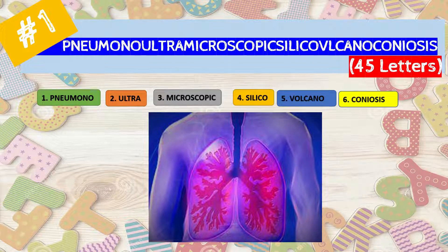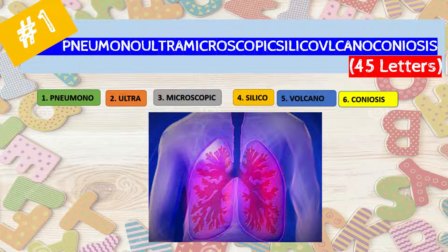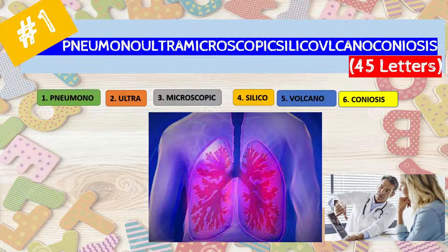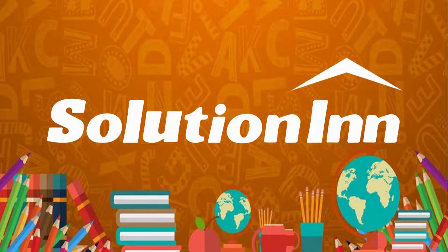Pneumonoultramicroscopicsilicovolcanoconiosis is a term for a lung disease caused by inhaling silica dust that causes inflammation in the lungs. As clear from the breakdown of this word, it is a disease caused by microscopic — that is, very tiny — dust particles of silica or sand. While this is an actual medical term, most people will never hear a doctor attempt to say this absurdly long word.